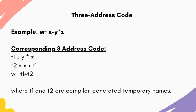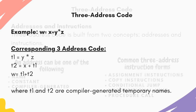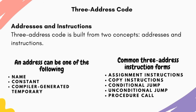In three-address code, we have the concept of address and instructions. An address may be a name, a constant, or a compiler-generated temporary. The three-address instruction forms include: assignment instructions, copy instructions, conditional jump, unconditional jump, and procedure call.